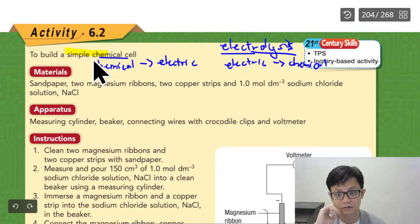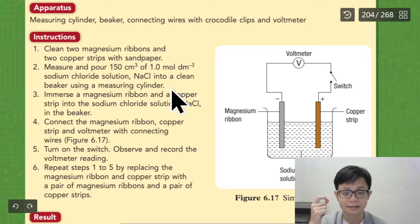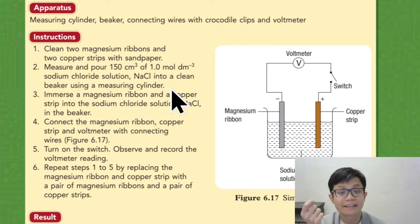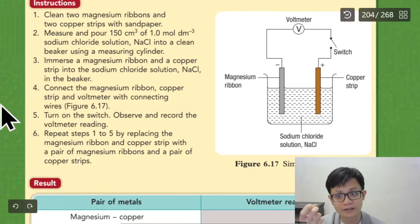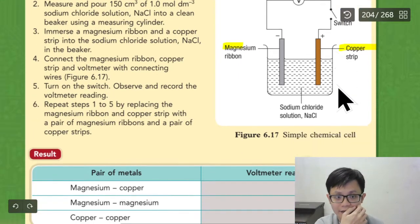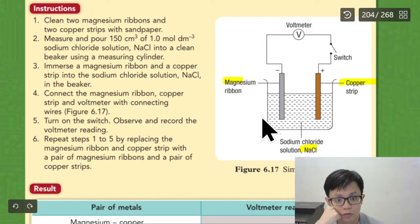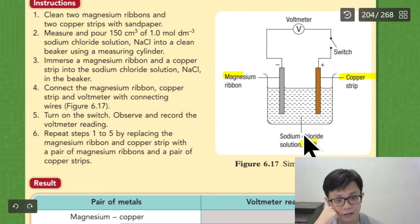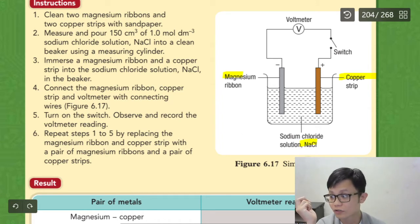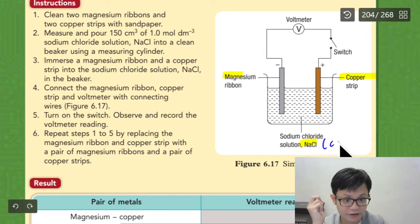Since we are talking about simple chemical cell, we want to use chemical to make electric. And what is the criteria? One of the criteria is use two different types of metal. We use magnesium and copper. And sodium chloride. We're going to use sodium chloride. The reason we don't want to use water, because sodium chloride is better. It's a better electric conductor.